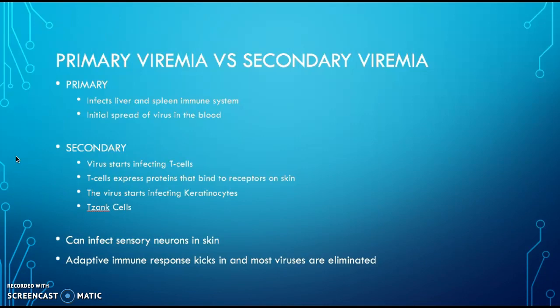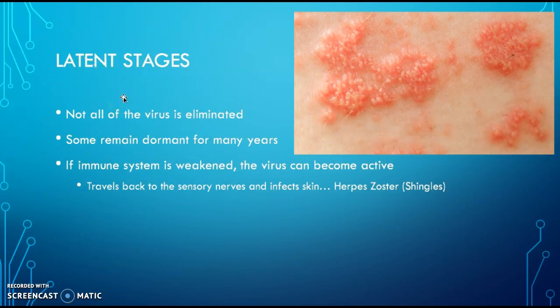The bumps you see are a cluster of these cells, called a Tzanck cell. This virus can also infect sensory neurons on the skin. The adaptive immune system will kick in and most viruses are then eliminated, but some can be left behind and remain in the latent, or dormant, state. If the immune system were to become weak, the virus can become active again, and when this happens, the virus will travel to the sensory nerves and infect the skin again. This is called herpes zoster, or shingles.